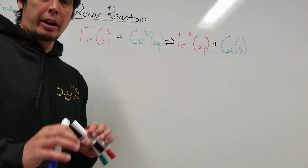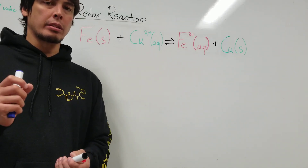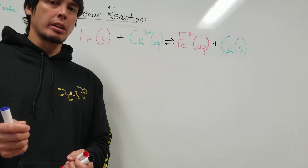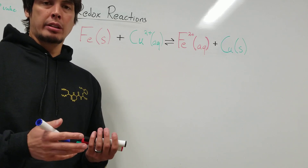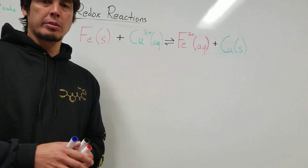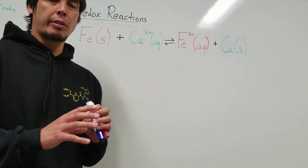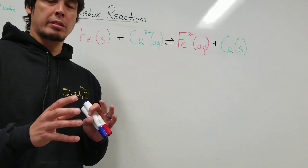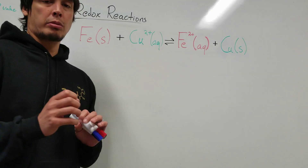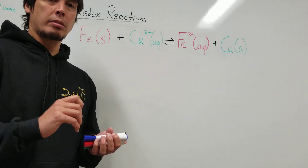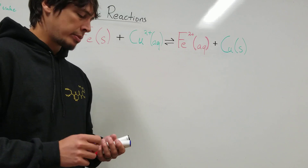A number of biological reactions involve the transfer of electrons from one species to another, and there are free energy changes associated with these reactions. Before we look into the free energy changes and electron transfer, we're first going to revisit and review some of the principles of redox reactions.